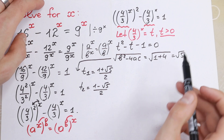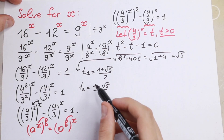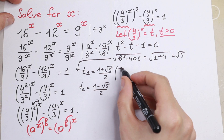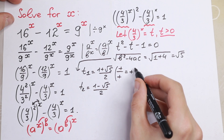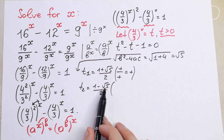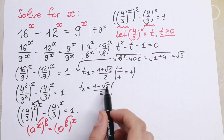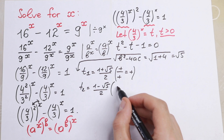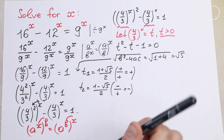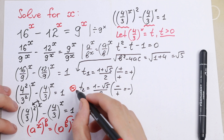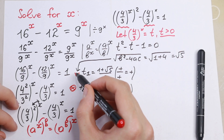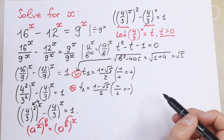We said t must be positive, greater than 0. The first root is clearly positive — positive numerator over positive denominator. But for the second root, the square root of 5 is a little greater than 2, so 1 minus square root of 5 is negative, and dividing by 2 keeps it negative. So we must reject the second root. We keep only t₁ equal to 1 plus square root of 5 divided by 2.